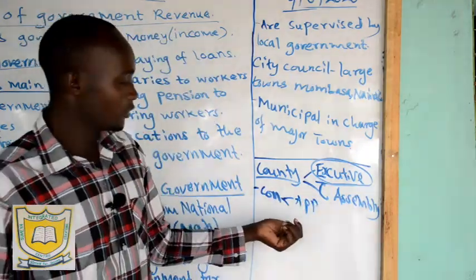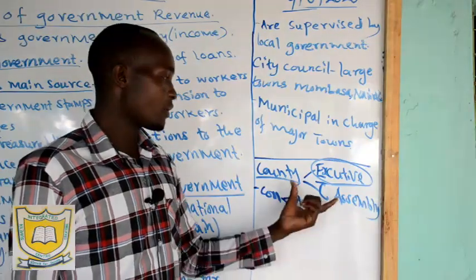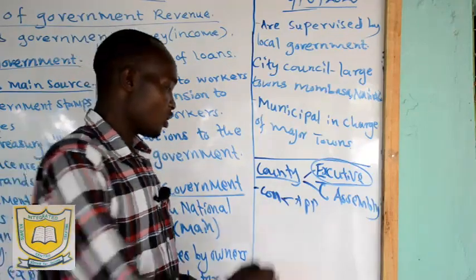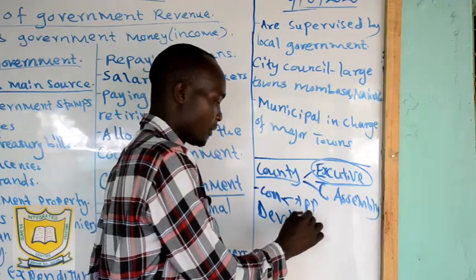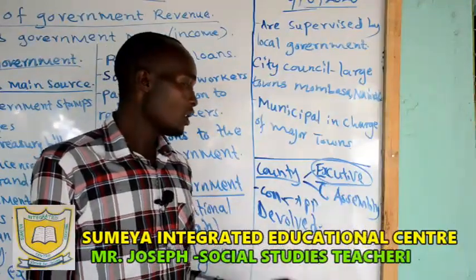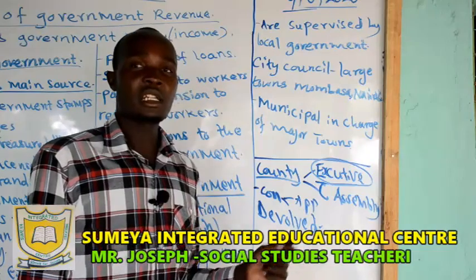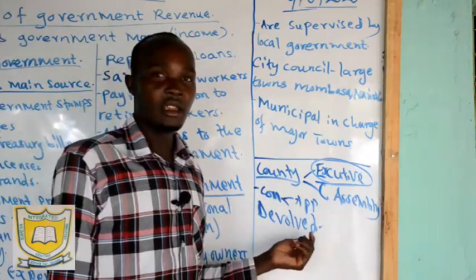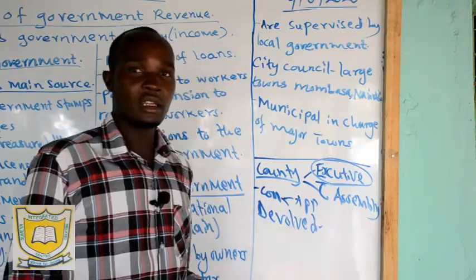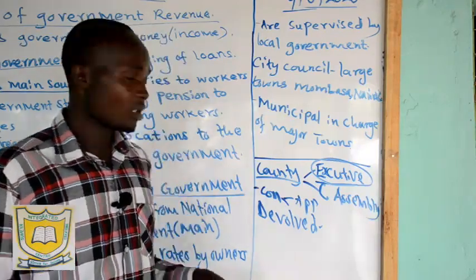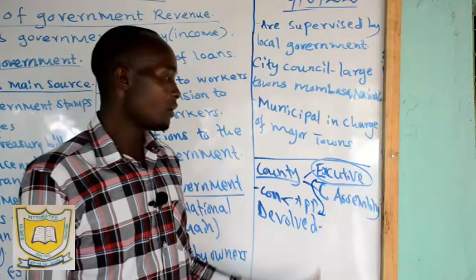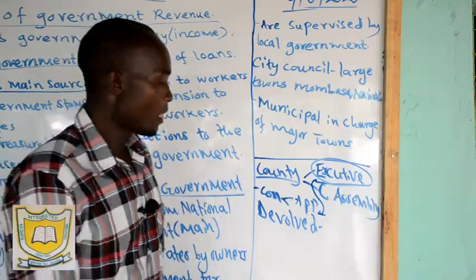The county government is also called devolved government, and we have 47 counties in Kenya. The governor chairs the executive committee, and that committee is made up of members appointed to represent different departments in the county — like Cabinet Secretaries at the national level. The county executive committee also implements many projects in the county.